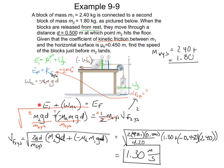So we solved for the final velocity using the equation: initial total system energy plus whatever non-conservative work is done by friction equals the final system energy — where system means both potential and kinetic. This is the only difference from pure conservative energy problems. Thanks for hanging in there and following along. Please let me know if you have any questions and I'll see you on the next one.